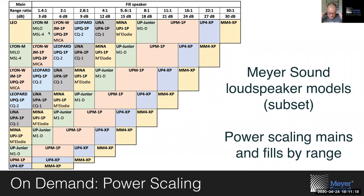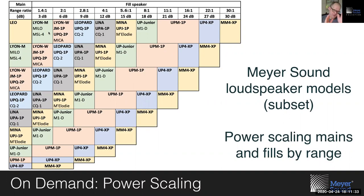Every time you increase a value — whether it's distance, volts, or pressure — by a factor of 1.4, that's going to be a 3 dB step. That's the idea behind this chart, and in a while we're going to see how to apply it.